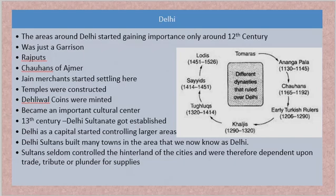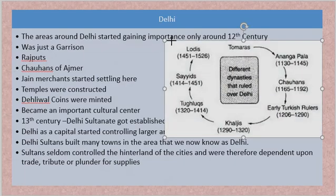Because of the trade routes, prosperity, and the need for money exchange — the Delhi coins and other things helping economic activity — it became a cultural center subsequently. First it became an economic center, then a cultural center, but earlier it was just a garrison — a town that houses soldiers and things related to the army. Later in the 13th century, the Delhi Sultanate got established and Delhi started to become a capital.